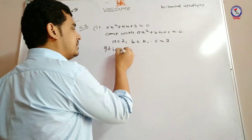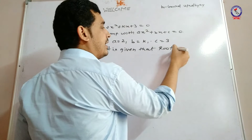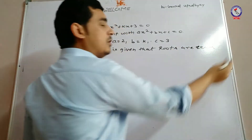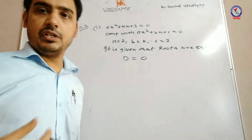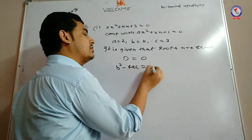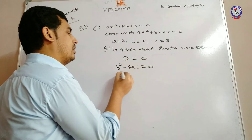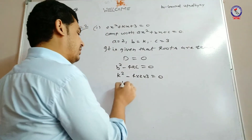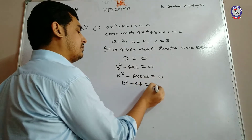It is given that roots are equal. So we have to apply the condition b squared minus 4ac is equal to 0. Substituting: k squared minus 4 into 2 into 3 is equal to 0. So k squared minus 24 is equal to 0, giving k squared equal to 24.